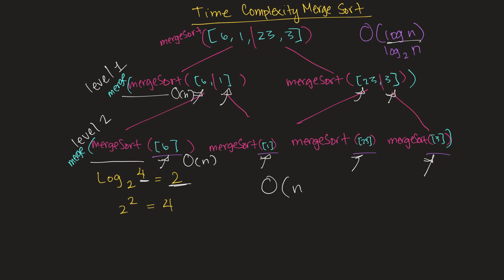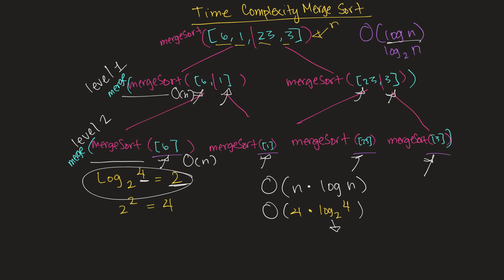So O(n) times O(log n) means O(n) is four — because four is our n — times log base two of four, which as we've seen is two. That's four times two: the number of elements in the array times the number of levels we need to traverse. For every level, we need to touch n elements in the array, which is two times four. And that's why merge sort has a time complexity of O(n log n).